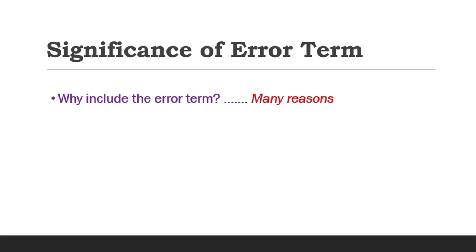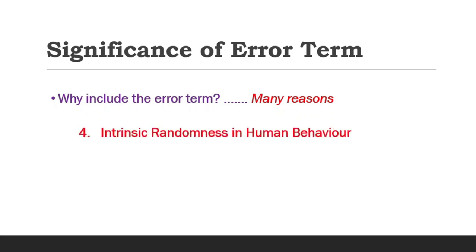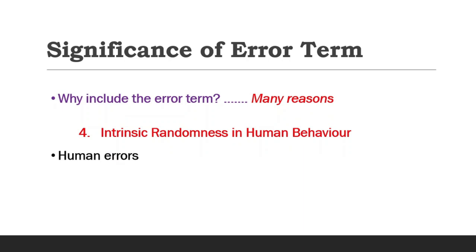The fourth point is intrinsic randomness in human behavior. Even if all relevant variables are included in the model, human susceptibility to committing errors in modeling cannot be explained no matter how hard we try. Thus, the combined effect of this randomness in human behavior is treated as the u parameter.